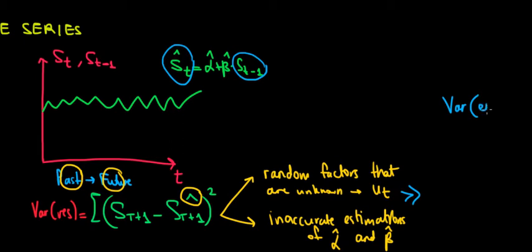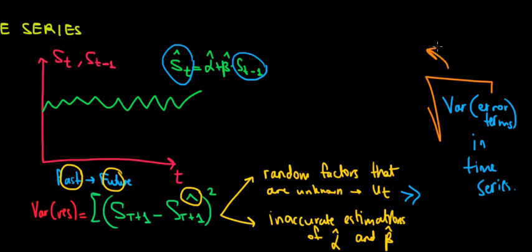This is going to represent the variance of the error terms in our time series. In other words, if we want to take the standard error of this regression model, we would take the square root of that variance. It's going to be very analogous with the standard error of the regression model in cross-sectional data.